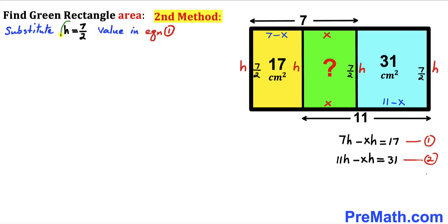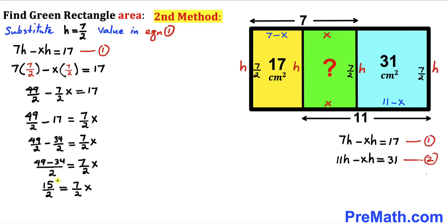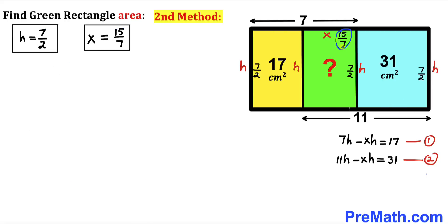Now substitute h = 7/2 into equation 1: 7 × (7/2) − (7/2) × x = 17. Moving terms to the right-hand side and 17 to the other side, we get 15/2 = (7/2) × x. The 2s cancel, giving 7x = 15. Dividing both sides by 7, x = 15/7. So the green rectangle's width is 15/7 cm.